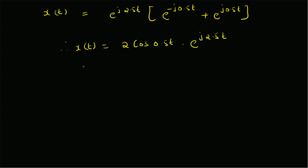Now let us look at the absolute value of this signal. The modulus of x of t is simply equal to two times the modulus of cos(0.5·t), since the absolute value of e^(j·theta) is always one. So the absolute value of this signal is just two times cos(0.5·t).